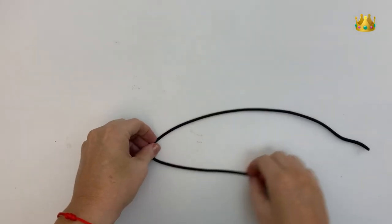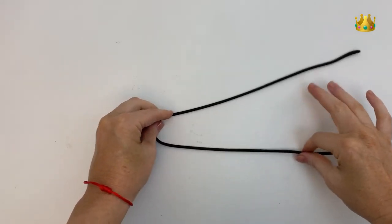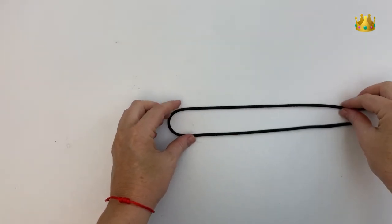To start with we make a loop in our cord on the left hand side. Then with our ends on the right hand side we bring this top tail down over the bottom tail.